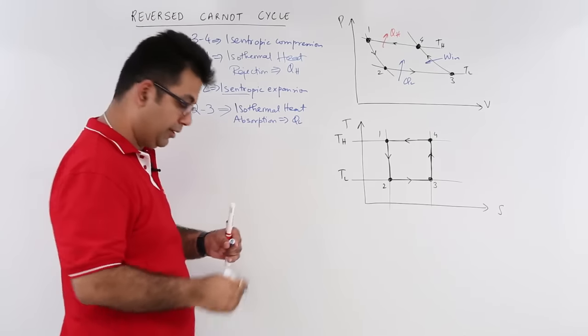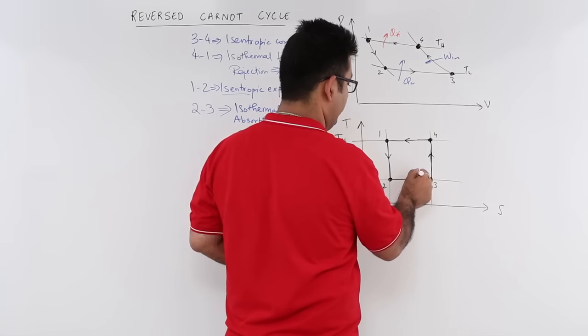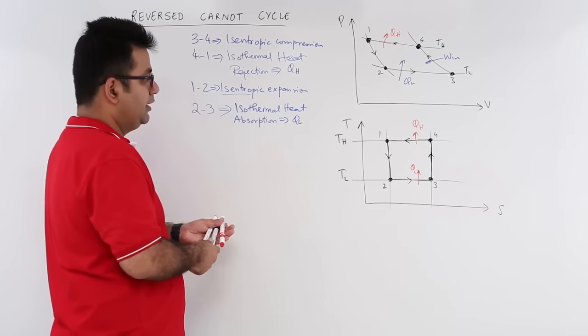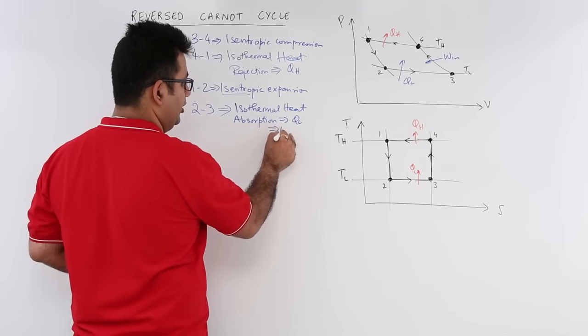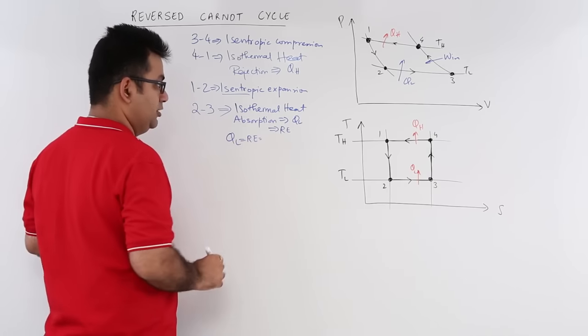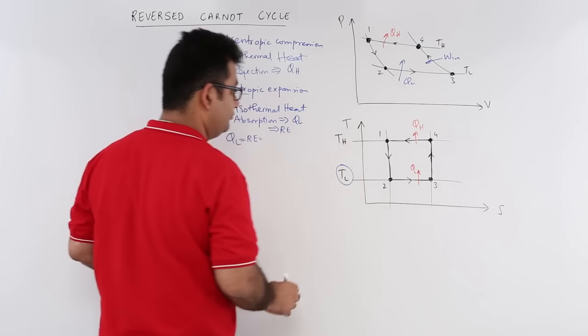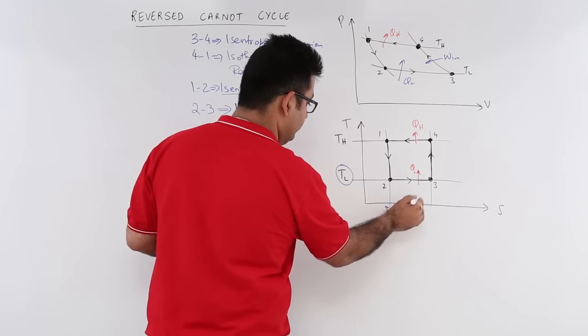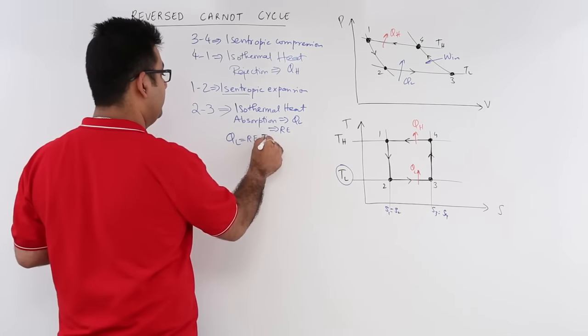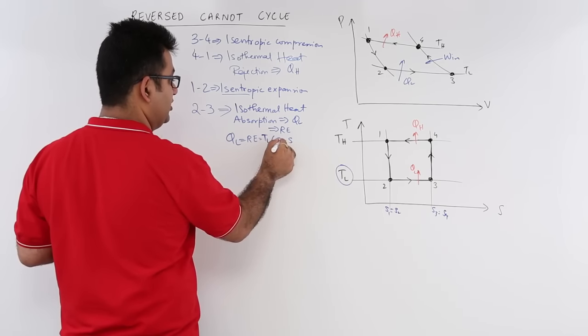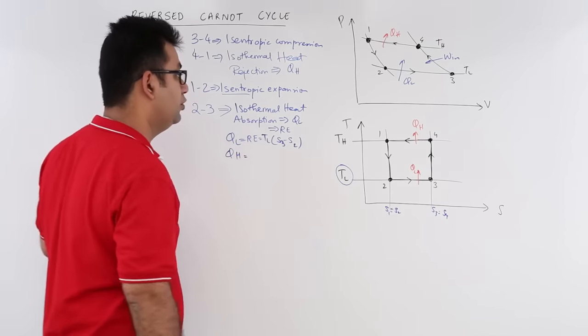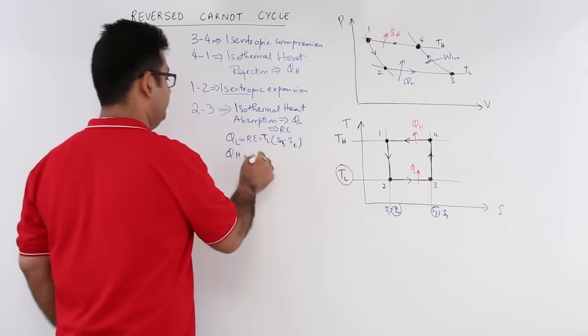You will have heat addition over here and heat rejection over here. The heat absorption is also called the refrigeration effect. Now if you find QL or RE, this is happening at TL, and we know that S1 equals S2 and S3 equals S4, so this becomes TL times (S3 - S2). Heat added QH equals (S3 - S2) but at high temperature TH.